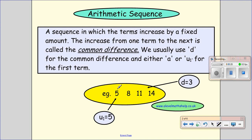It's a sequence of numbers where you have a common difference between each term. So between 5 and 8, the difference is 3. 8 and 11, the difference is 3. 11 and 14, the difference is 3.